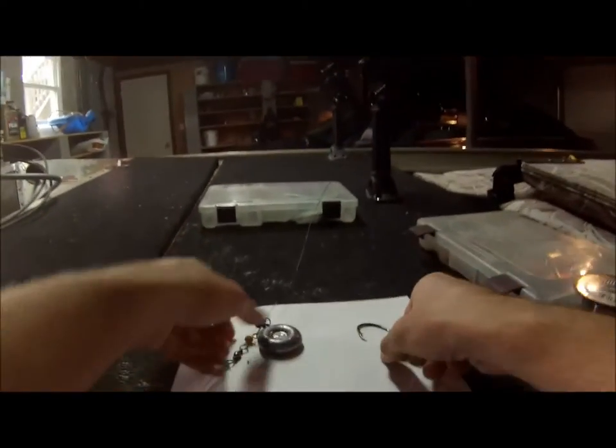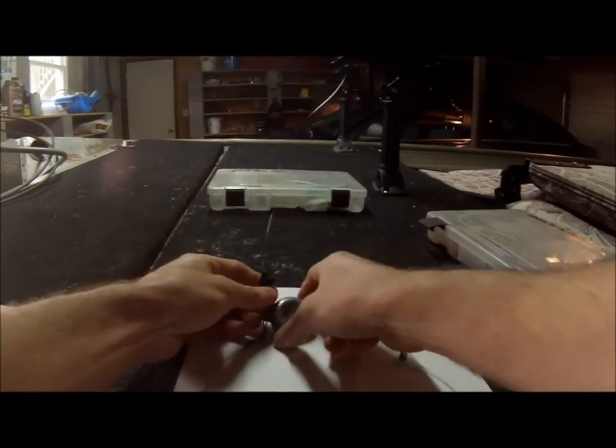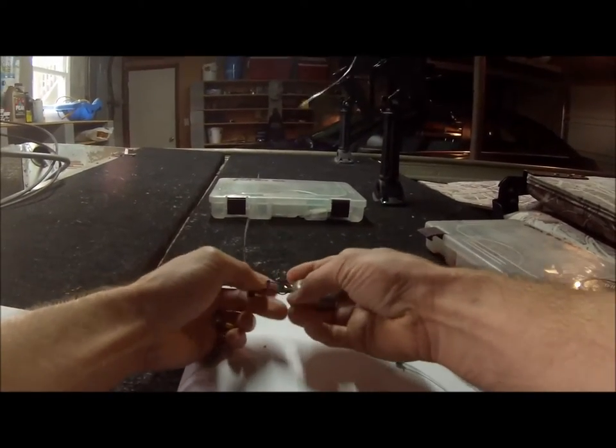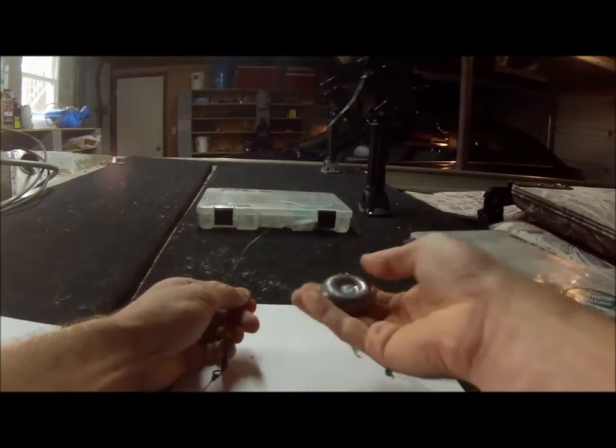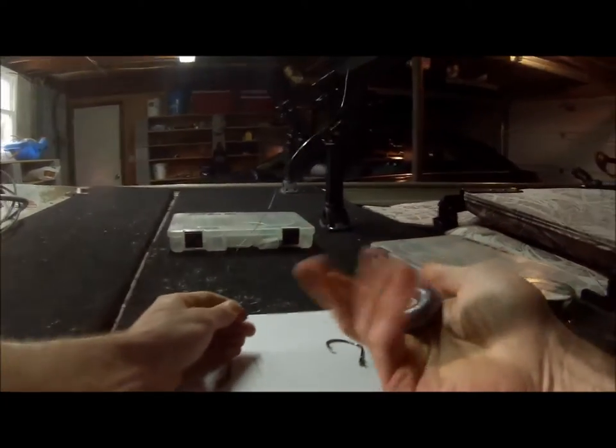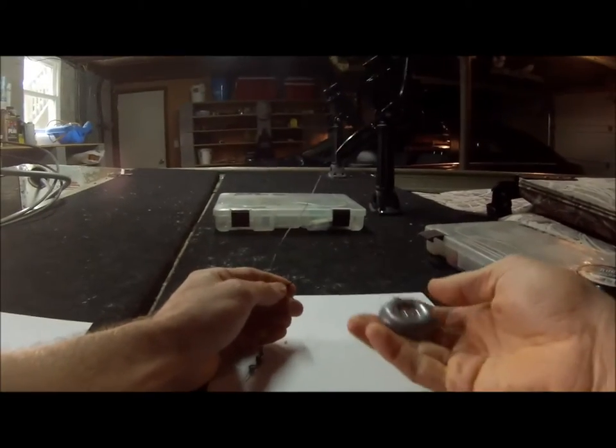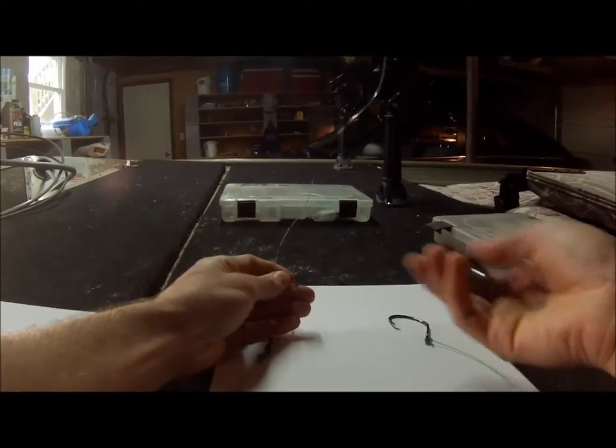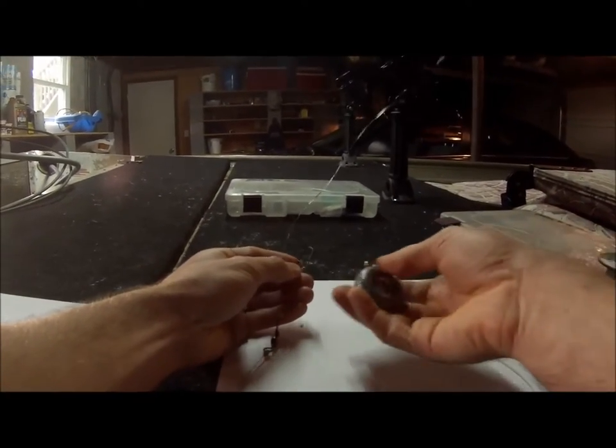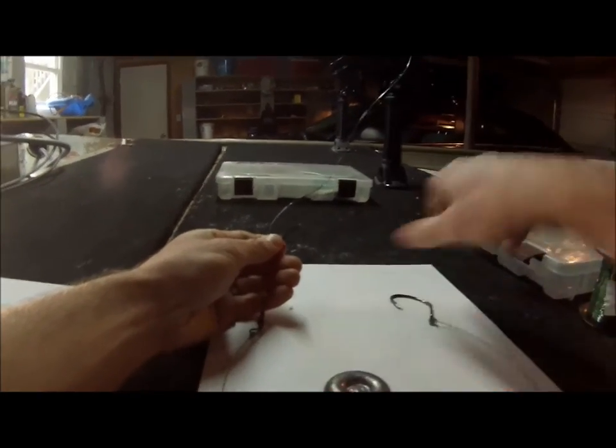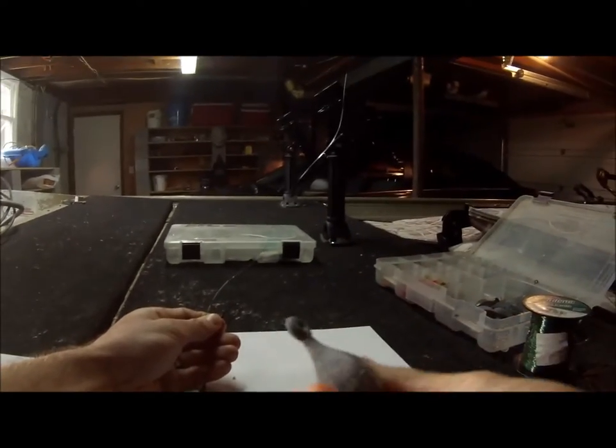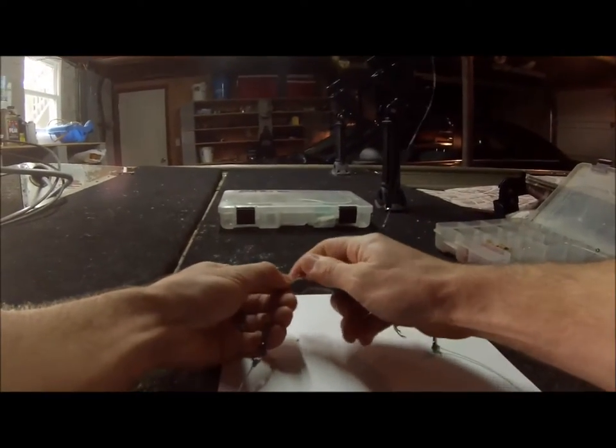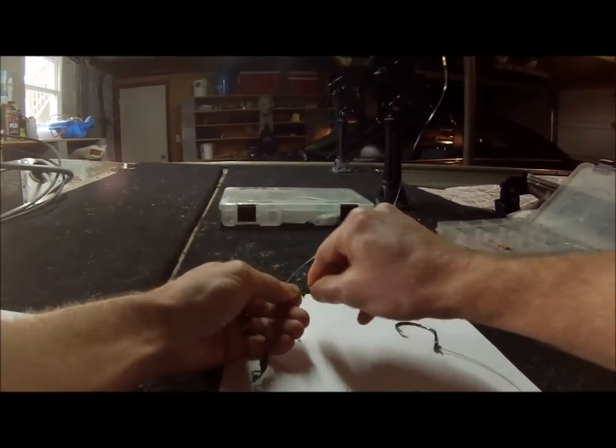So another setup I use, it's pretty much the same thing. It's a Carolina rig, but instead of using the no roll sinker, I use a disc sinker, which I'm starting to move to just because it's a little more efficient while you're fishing. If you want to change your weights, you can easily do this with the disc sinker, or even a bank sinker as well.